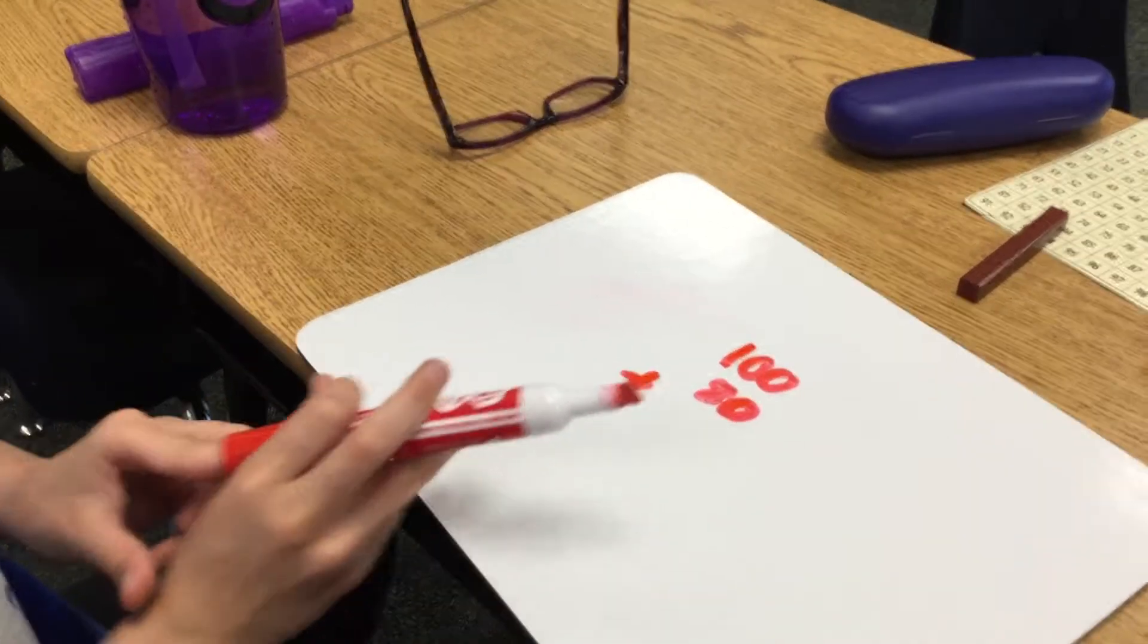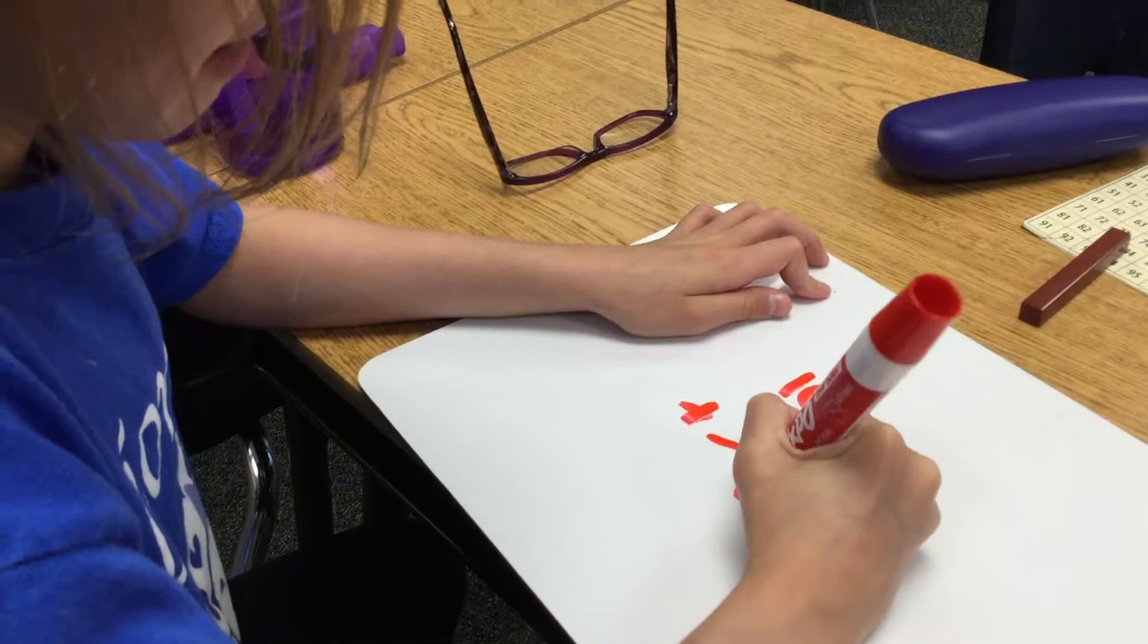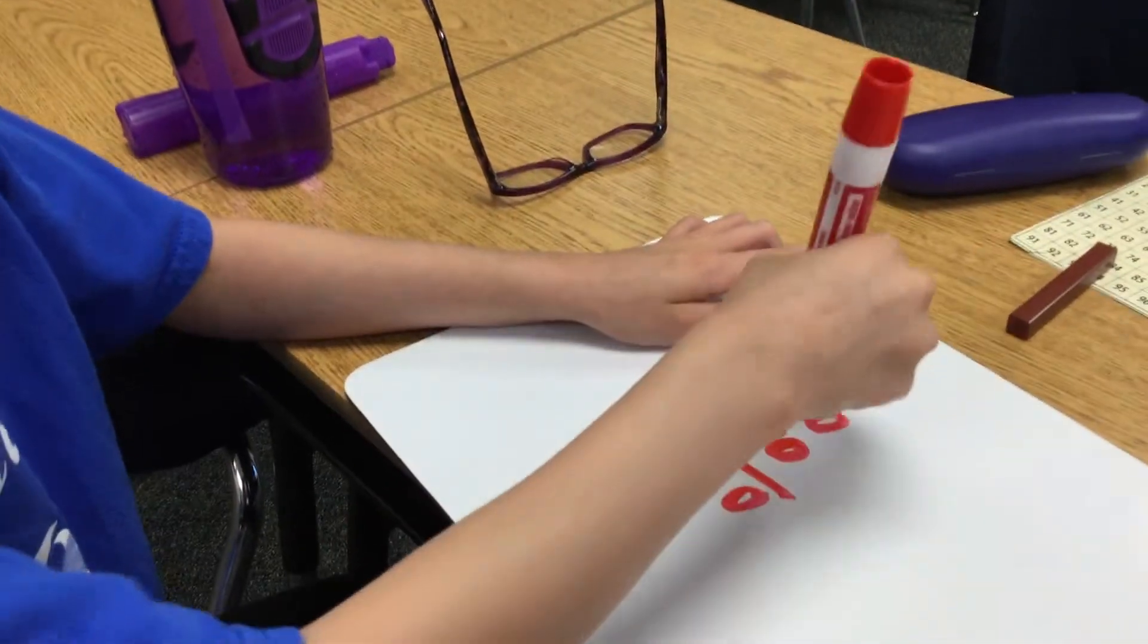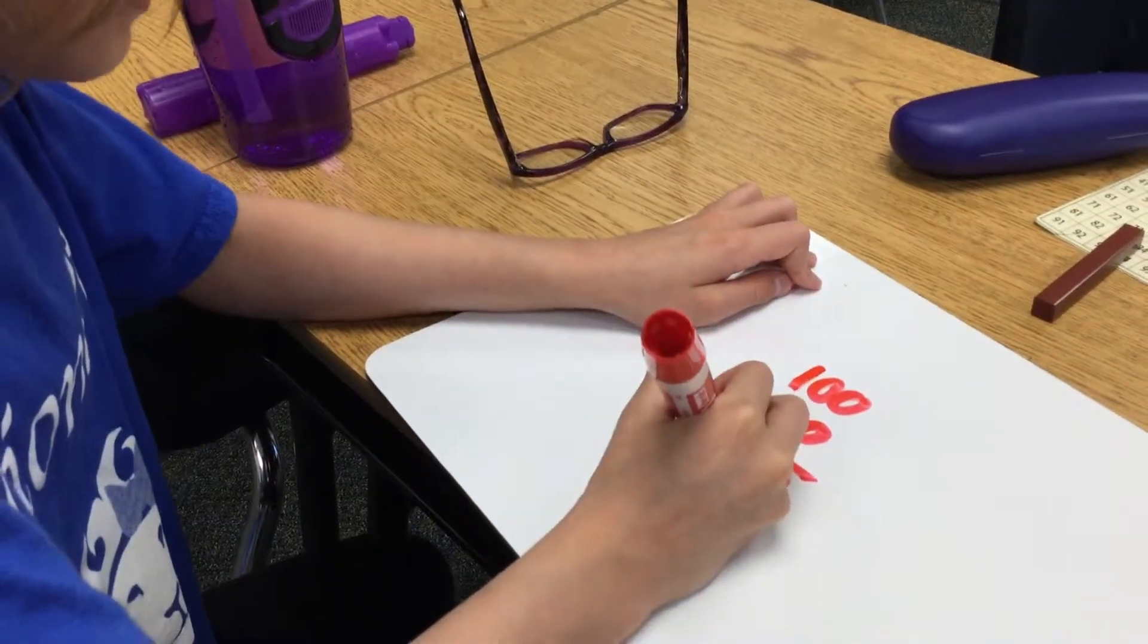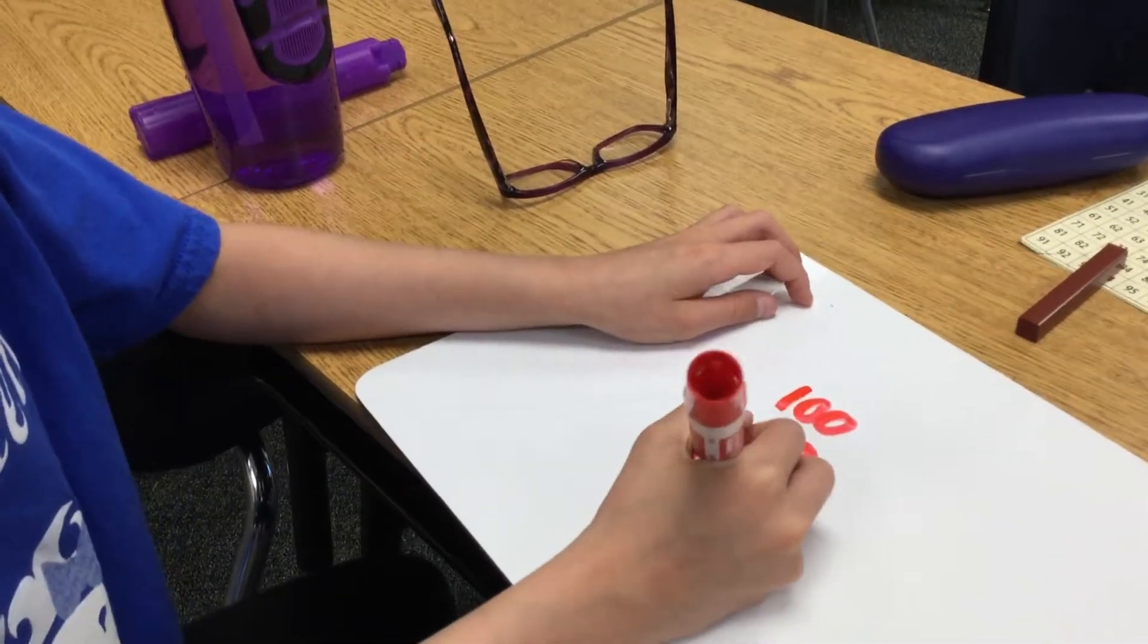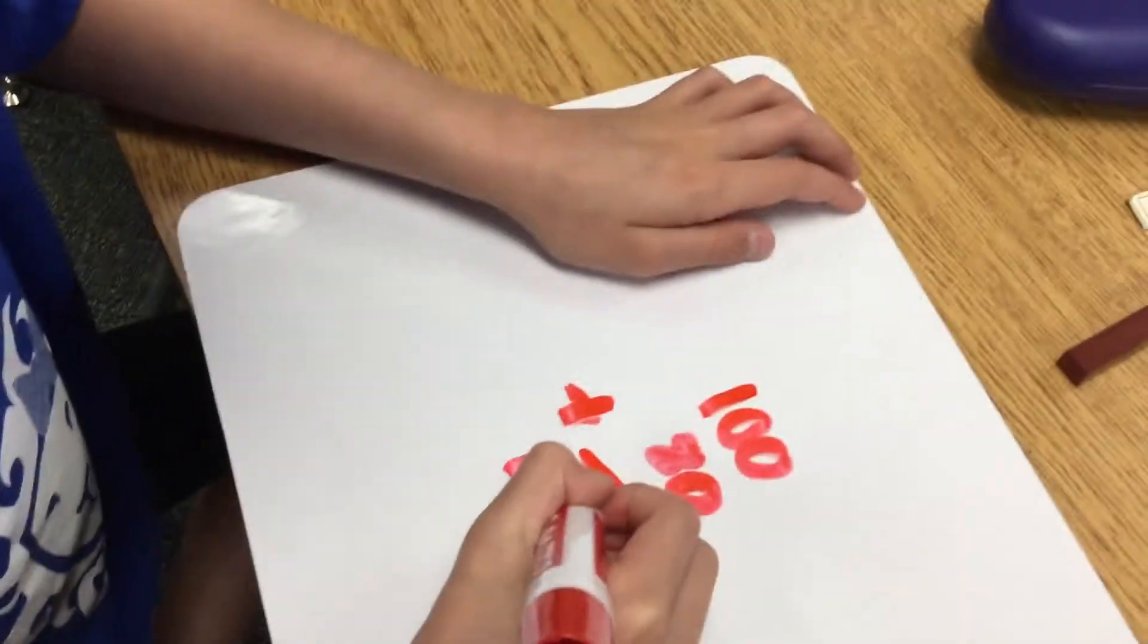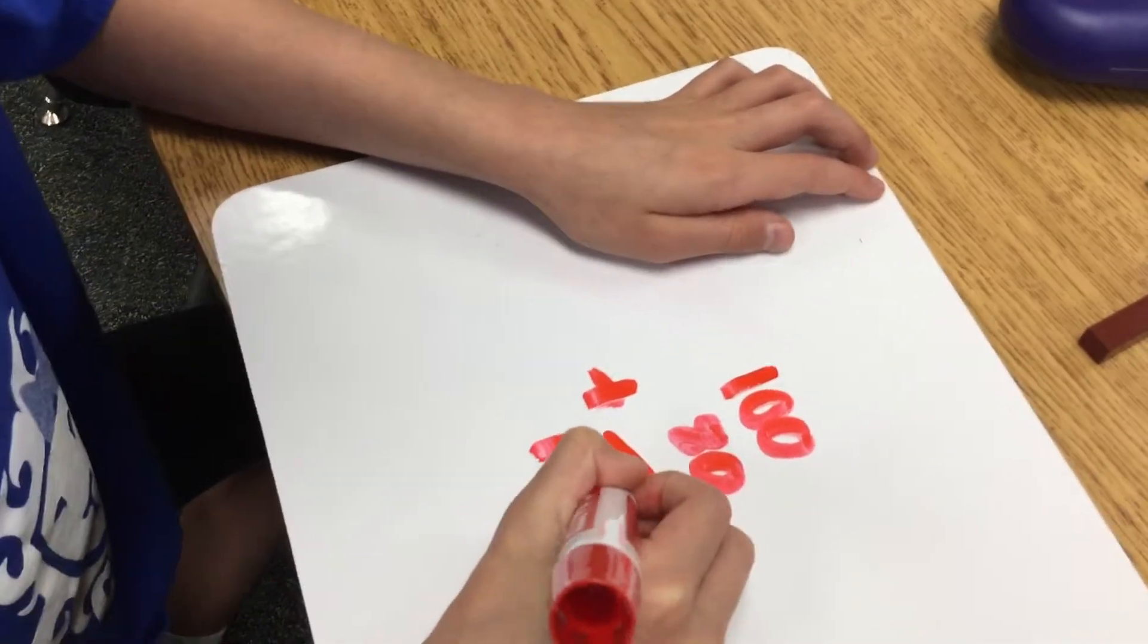So 0 plus 0 is 0 down here. And 0 plus... anyway, I can just add that because I know that that's not going to do it. And 0 plus 8 is just 8, so it's 108.